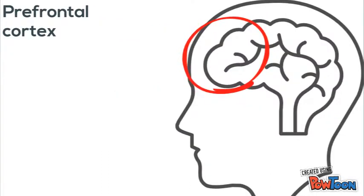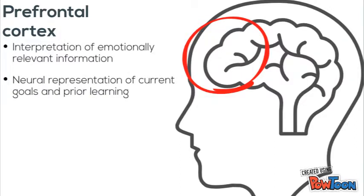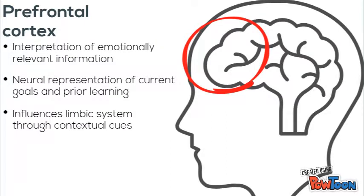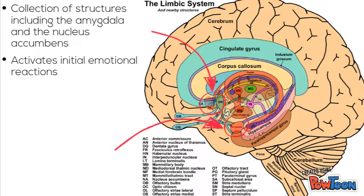The prefrontal cortex interprets emotionally relevant information based on current goals and prior learning. Patterns of prefrontal activity provide contextual cues which either enhance or reduce excitability in the limbic system. The limbic system, particularly the amygdala and the nucleus accumbens, activates initial emotional reactions.